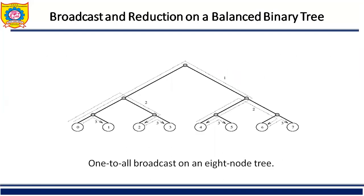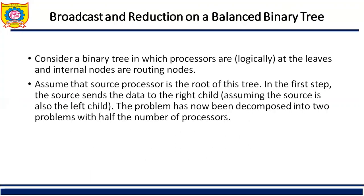This figure shows that there is no contention on any communication link at any time. The difference between communication on hypercube and tree is that there are different numbers of switching nodes along different paths of the tree. This is the broadcast and reduction algorithm for the balanced binary tree.